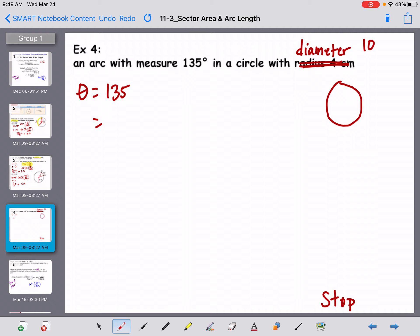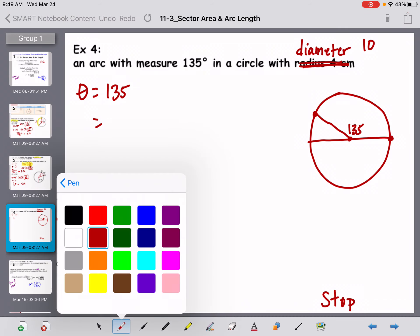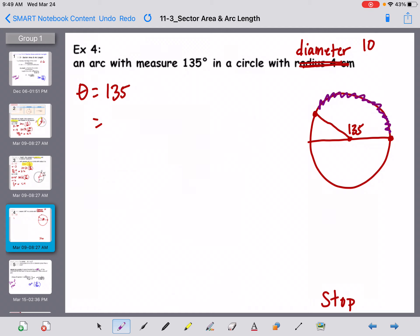So that means that here's my circle, here's my center. I'm going to make this a little bit bigger. Circle, diameter, and 135 is probably like this. So this is 135. I'm trying to find this arc length here. Now when it tells you that the diameter is 10, you've got to know that the diameter is 2R. So that would be 10 equals 2R, divide by 2 and the radius will be 5.